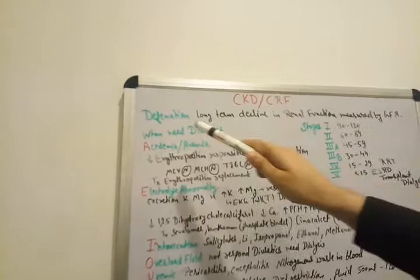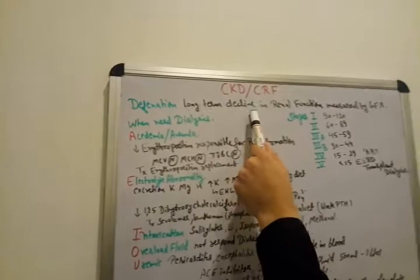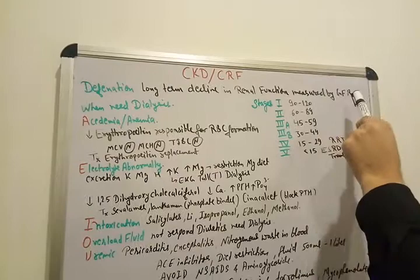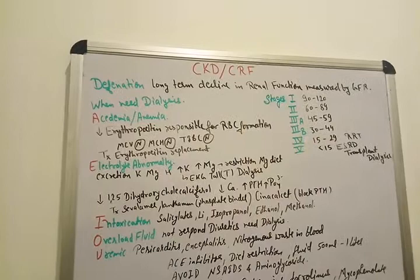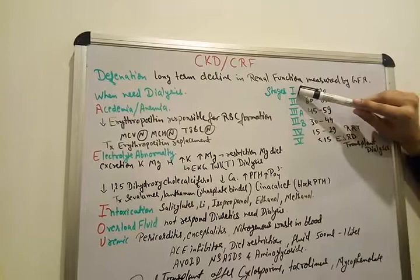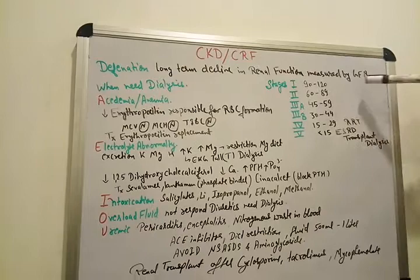Definition, what does it mean by CKD? Its long term decline in renal function measured by GFR, glomerular filtration rate. And how to classify this CKD? We are going to classify this CKD in various stages like stage 1, stage 2, 3A, 3B, 4 and 5 according to the basis of GFR.